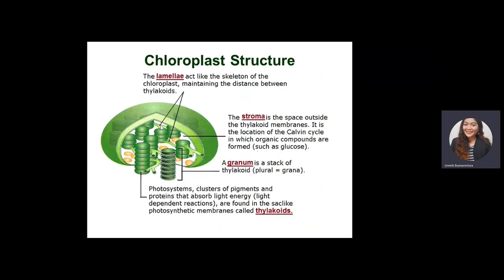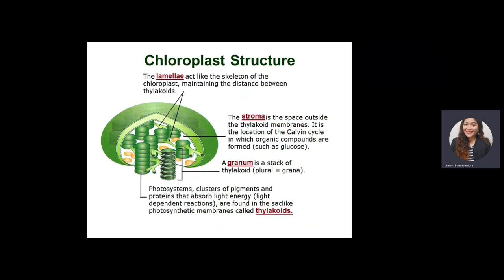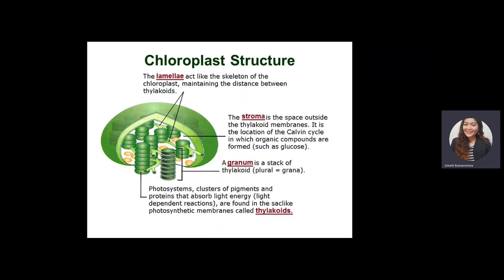The horizontal lines on our PowerPoint represent the lamella. Next is the stroma — the stroma is the location where the Calvin cycle occurs, where glucose is created in the plants. Next is the granum, which is known as the stack of thylakoids (plural: grana). The thylakoid itself is the site where sunlight is captured, and where photosystem I and photosystem II occur — those are the light-harvesting organelles of the chloroplast.